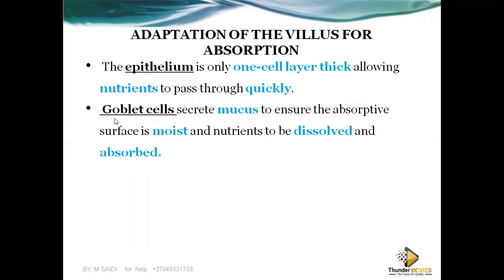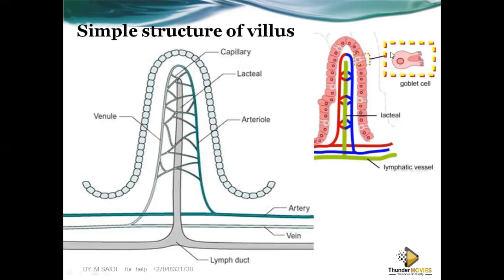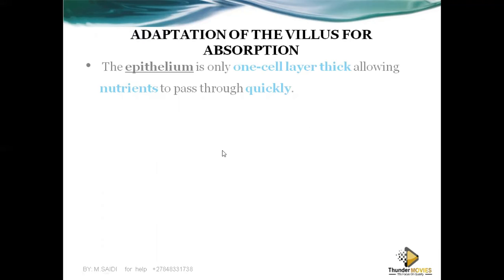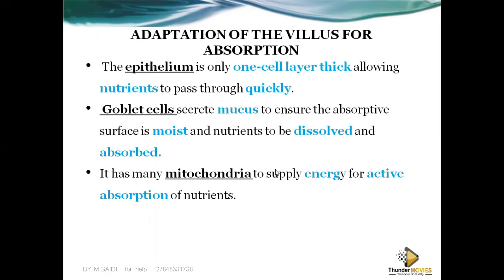Goblet cells secrete mucus to ensure the absorptive surface is moist and that nutrients can be dissolved and absorbed. The villus also has many mitochondria to supply energy for active absorption of nutrients. Mitochondria provide energy, which aids active transport across the cell membrane.